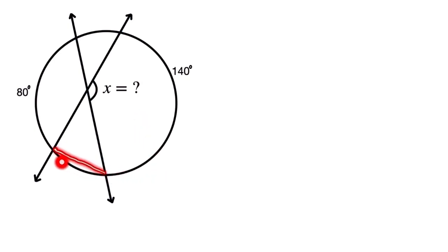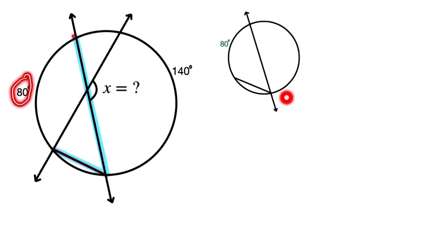At first we join this line from here to here. Now we focus on this part of figure. Just take out this figure from the original figure. It looks like this. Here this angle is 80 degrees. According to circle theorem,